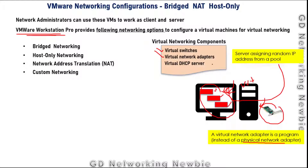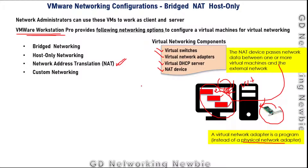We will also have a virtual DHCP server that assigns IP addresses to all the virtual machines. In addition to the virtual DHCP server, we have a NAT device, which translates IP addresses — mostly from private to public. This NAT device passes network traffic between virtual machines and the external network, acting as the interface to the rest of the world.